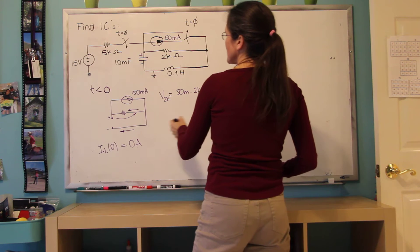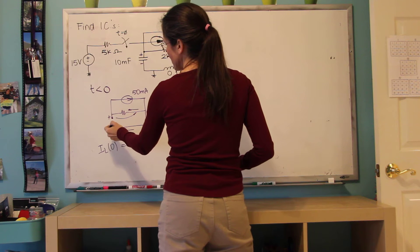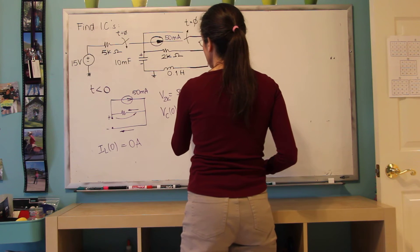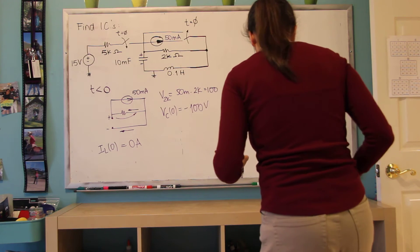However, it's 100 in this direction. So if I put the capacitor with this polarity, the voltage across the capacitor is minus 100 volts. This is at zero.